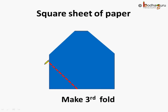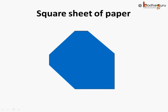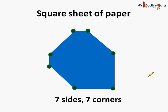Now let's make the third fold on this side. How many corners and sides are there? Let's count: one, two, three, four, five, six and seven. There are seven corners. How many sides? One, two, three, four, five, six, seven. Seven sides are there. So we say this paper has seven sides and seven corners. By making a fold, we are increasing the number of corners and also the number of sides is increasing. The same paper is there, but just by folding we are getting more number of sides and corners.